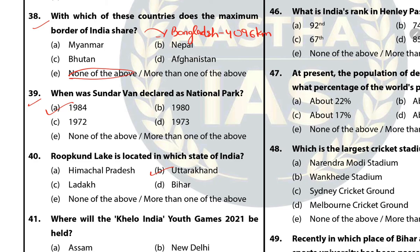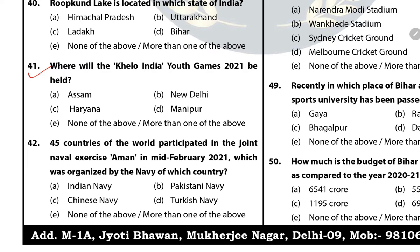Question 41: Where will the Khelo India Youth Games 2021 be held? The answer is C — Haryana. Question 42: Forty-five countries of the world participated in joint naval exercise Amman in mid-February 2021, which was organized by the Navy of which country? The answer is B — Pakistani Navy.